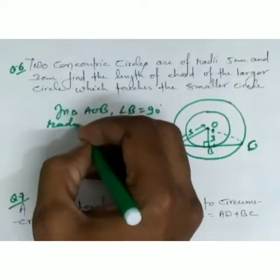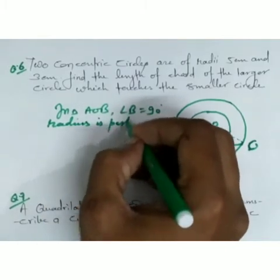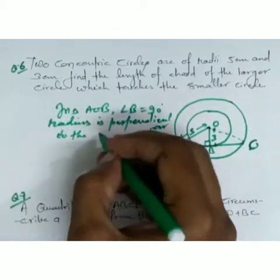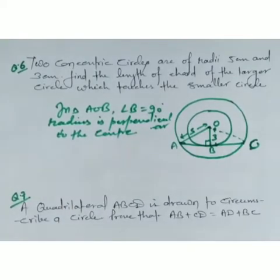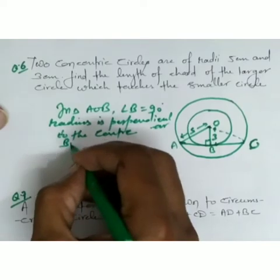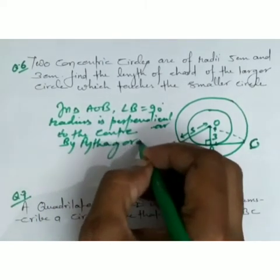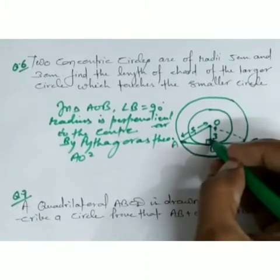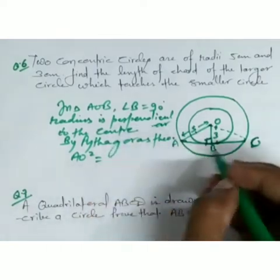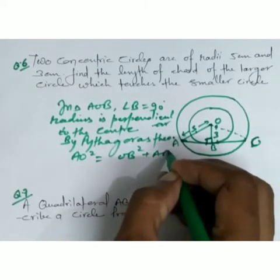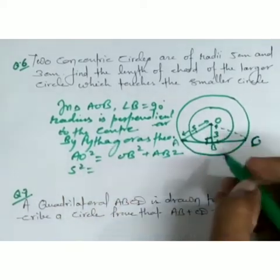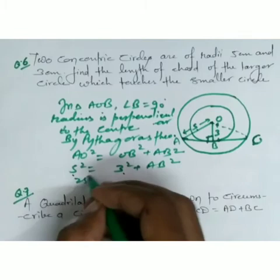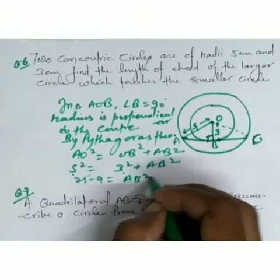Since radius is perpendicular to the tangent and the perpendicular from center bisects the chord, in triangle AOB, angle B equals 90 degrees. By Pythagoras theorem: AO square equals OB square plus AB square. So 5 square equals 3 square plus AB square. That gives 25 minus 9 equals 16, so AB square equals 16.